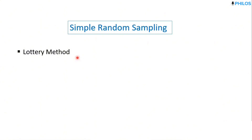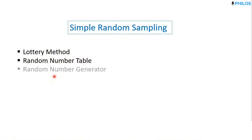Another method is the random number table, where we use a statistics table. Check the description area below for a link on how to do that. There is also the random number generator method, where you use statistics software or tools such as Excel, Python, R, or similar programs to generate a sample. Links for both are in the description below.